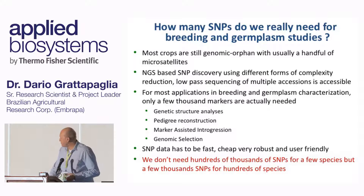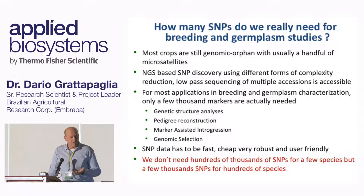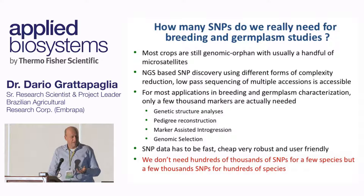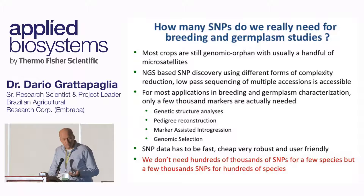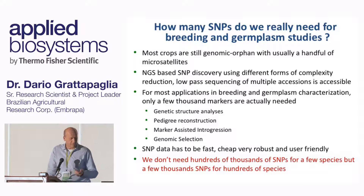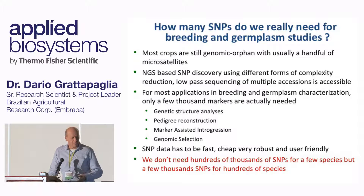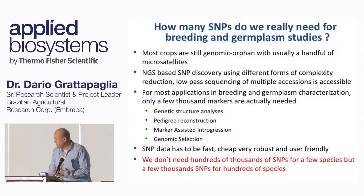Not everything is eucalyptus, and not everything has a large industry behind it. The question is: how many SNPs do we really need for breeding and germplasm studies? For most applications we really don't need that many markers. Maybe a couple thousand markers will do for most questions posed for these genomic orphan crops. Most applications — breeding and germplasm characterization — have to do with genetic structure analysis, pedigree reconstruction, marker-assisted integration, and genomic prediction. Depending on the extent of linkage equilibrium in your population, with a few thousand markers you can probably do very well.